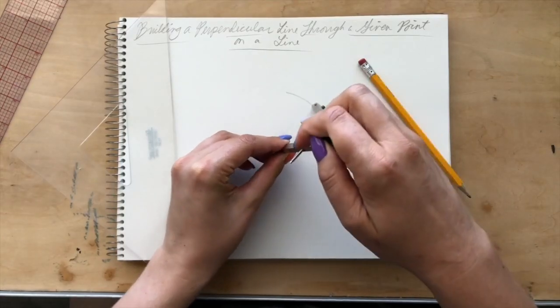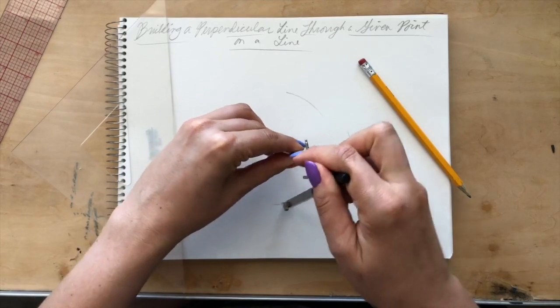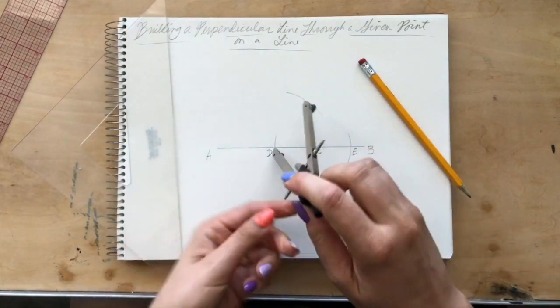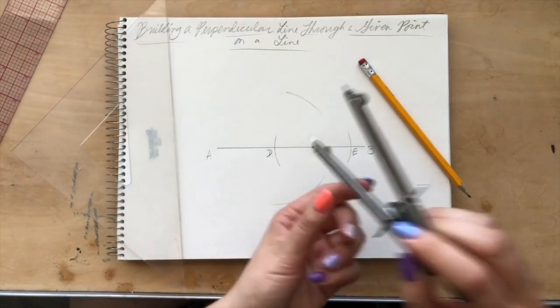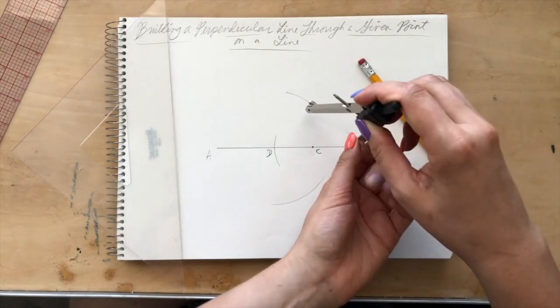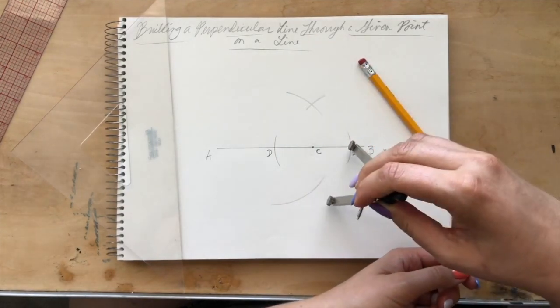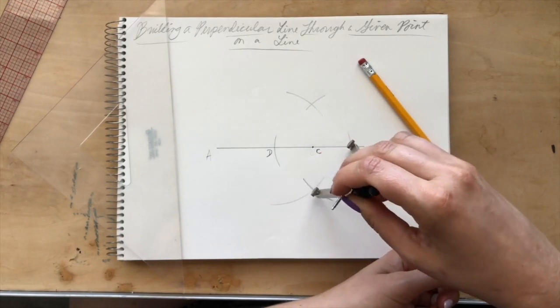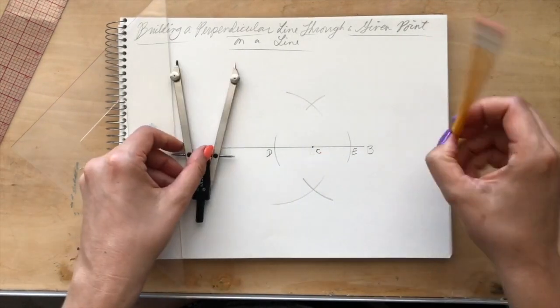An arc above and I'm going to swing my compass and make a mark below. Don't move your compass, just swing it. Then I'm going to put my compass point on E and do the same exact thing. Make an arc and make an arc. Those are two new points.